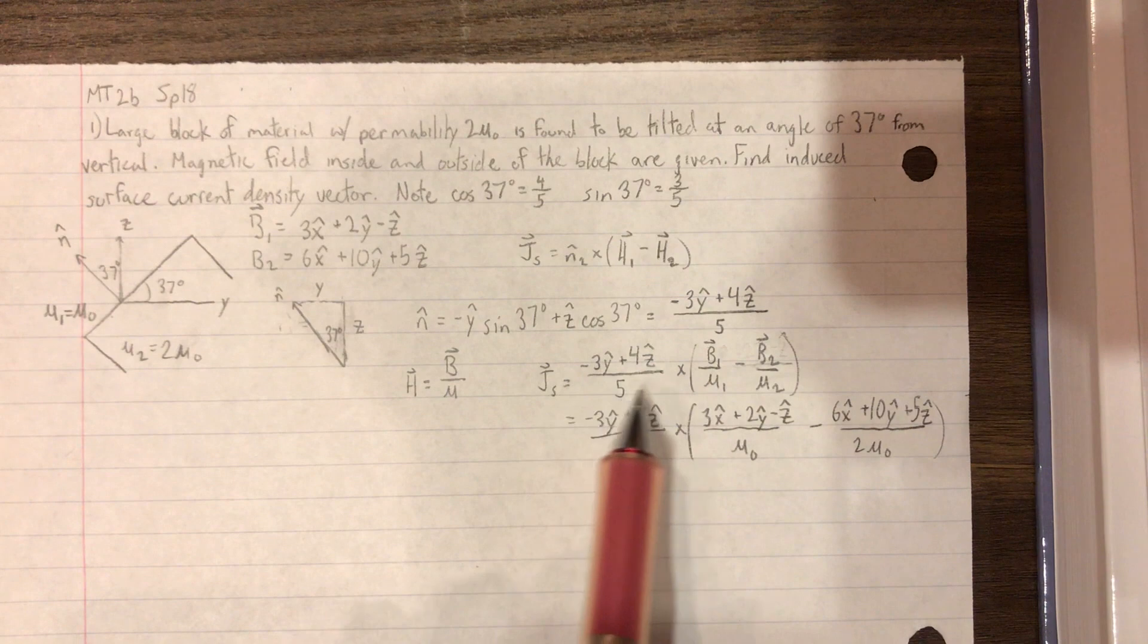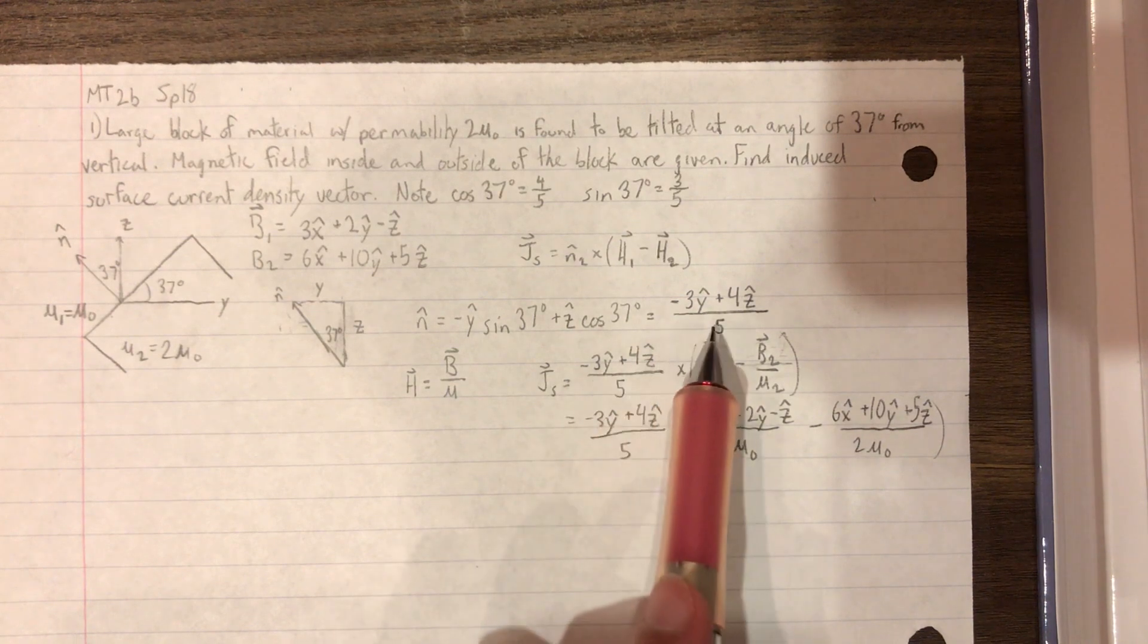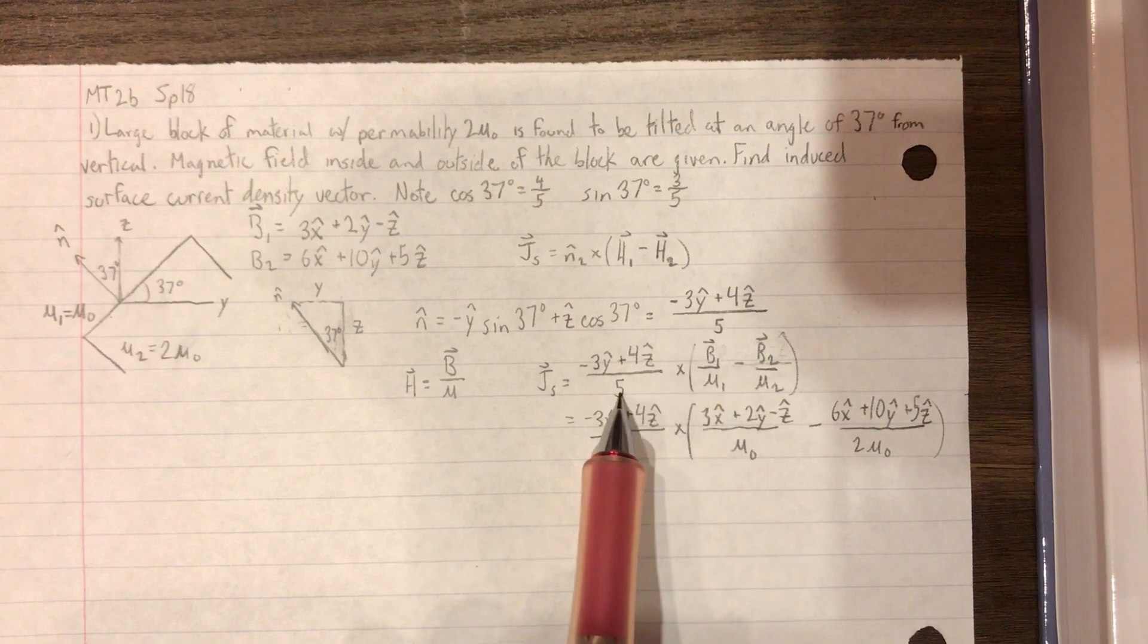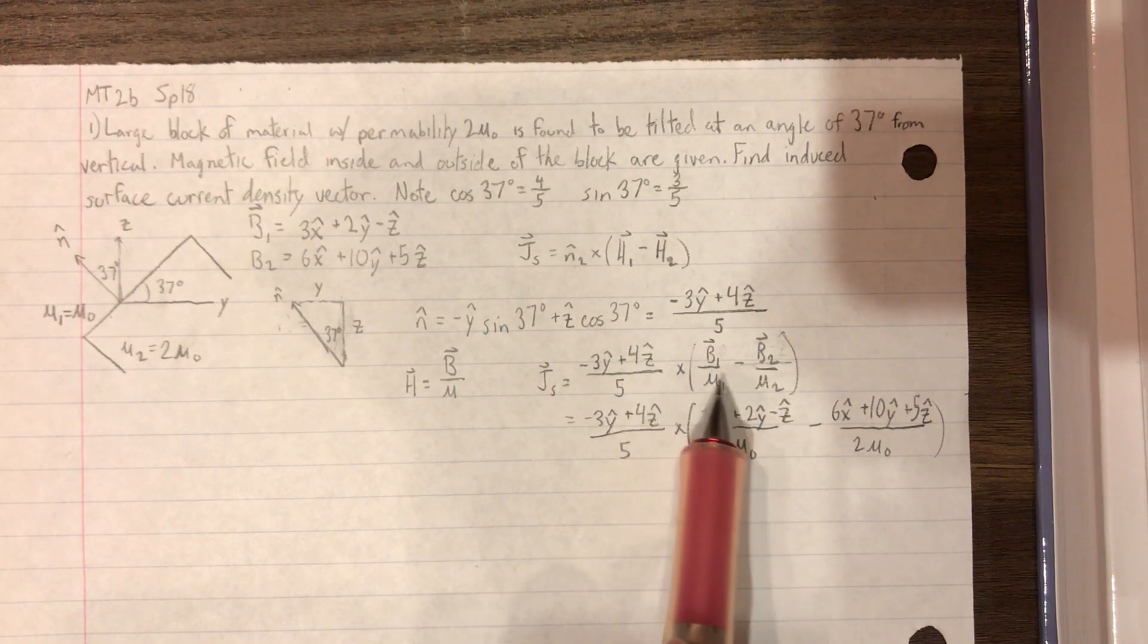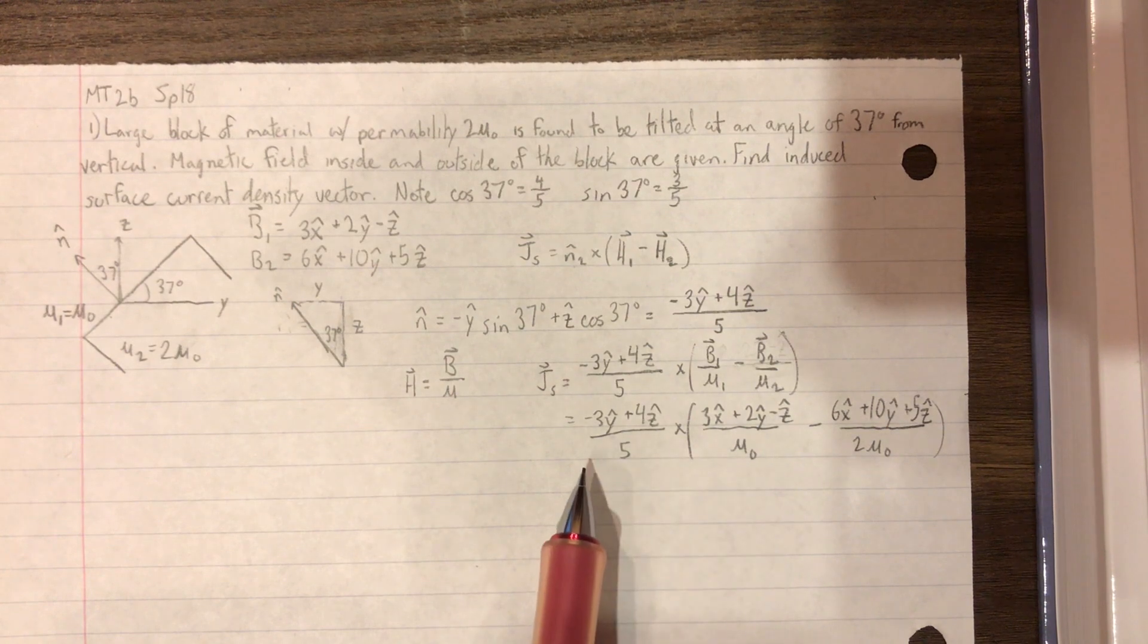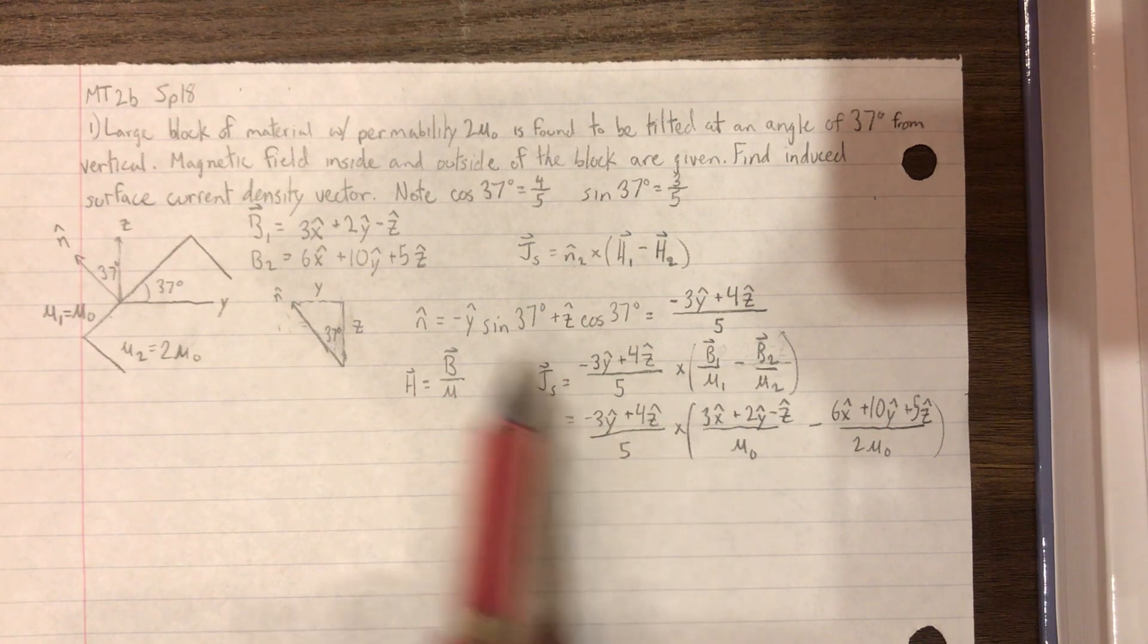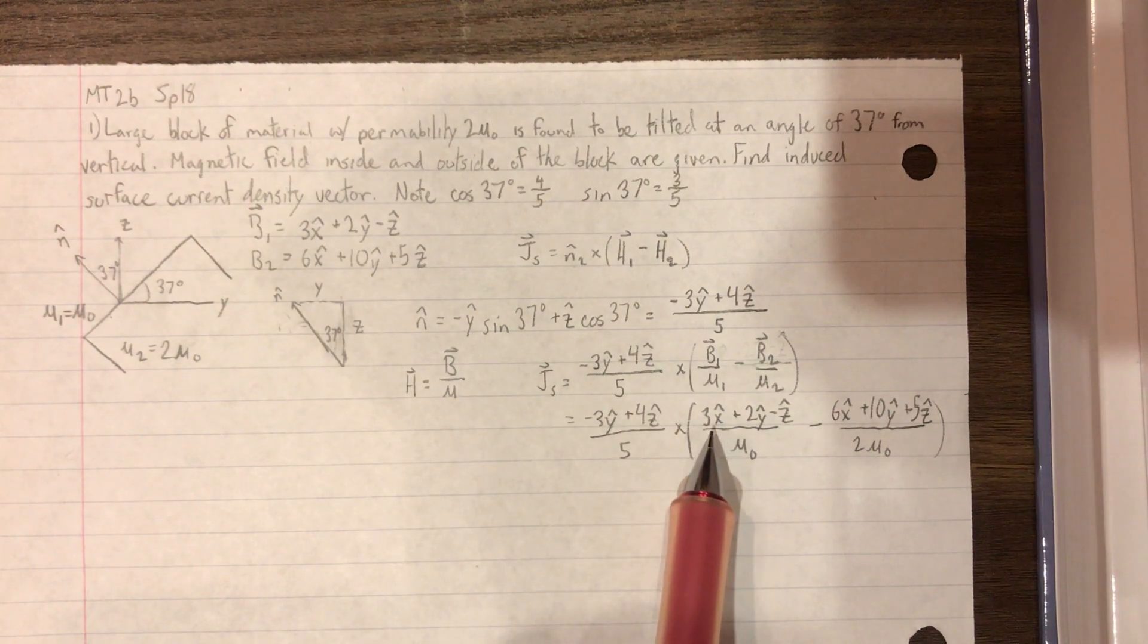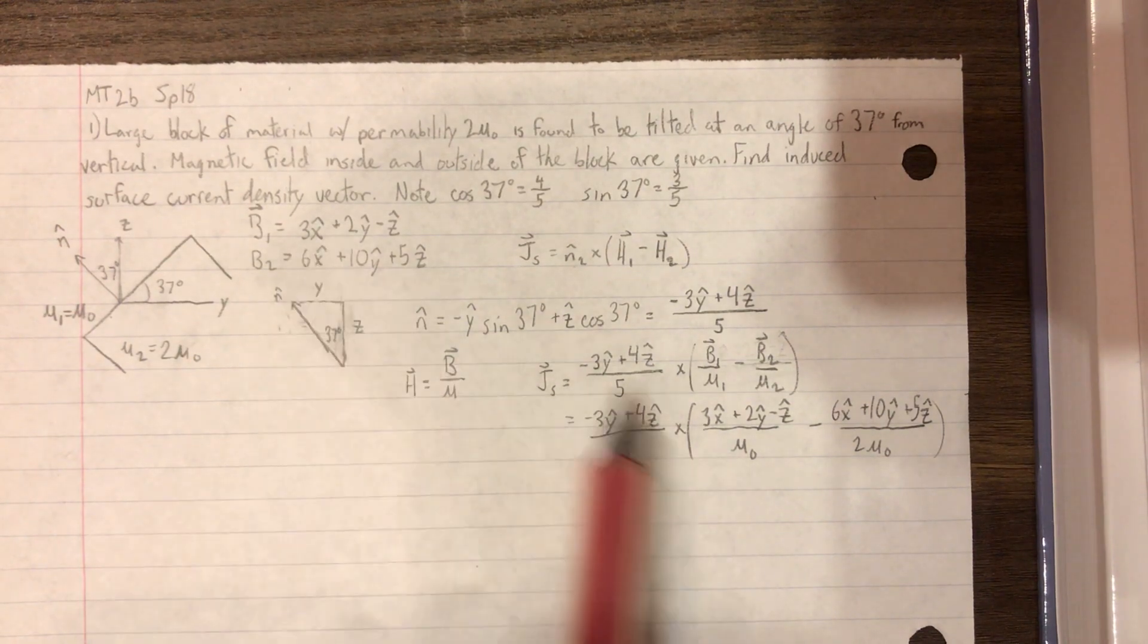So we use, we would plug in our N hat over here, cross our B1 over mu1 minus B2 over mu2. So since we are given B1 and B2, we can simplify it, or plug it in.